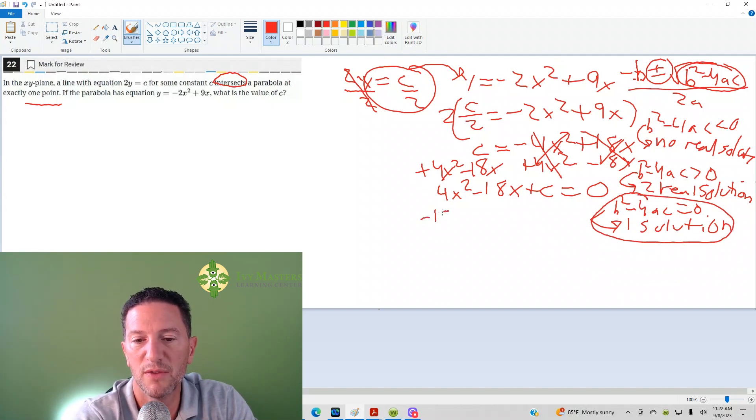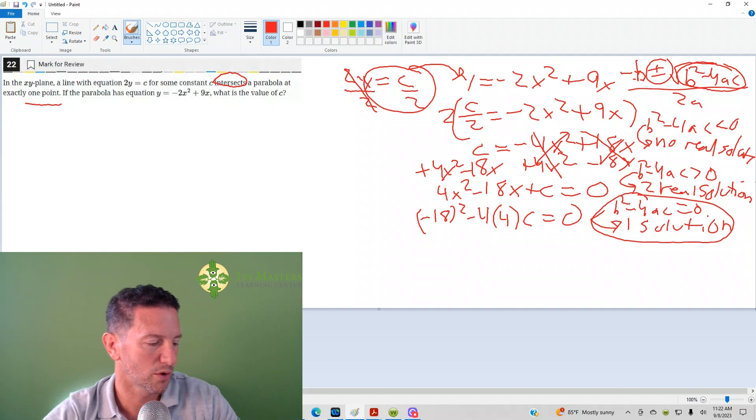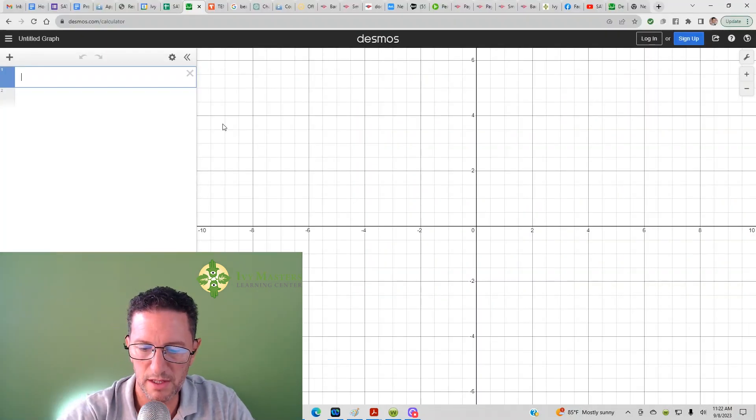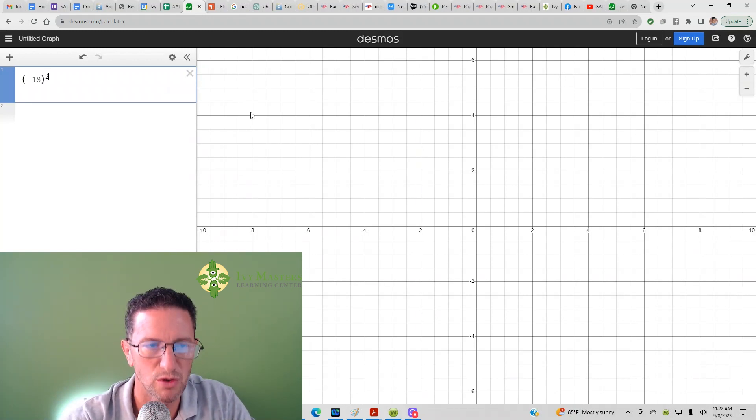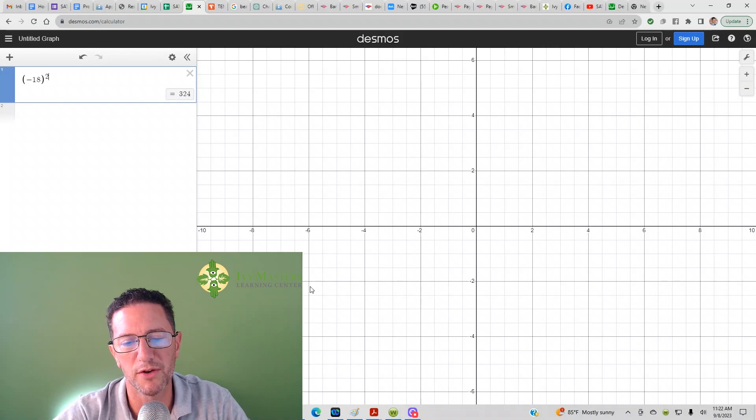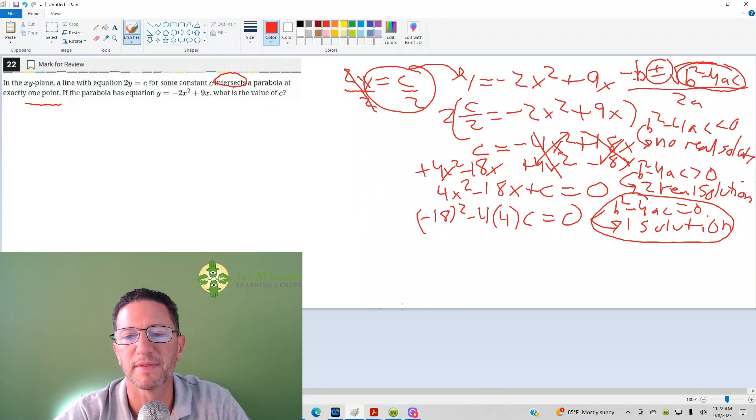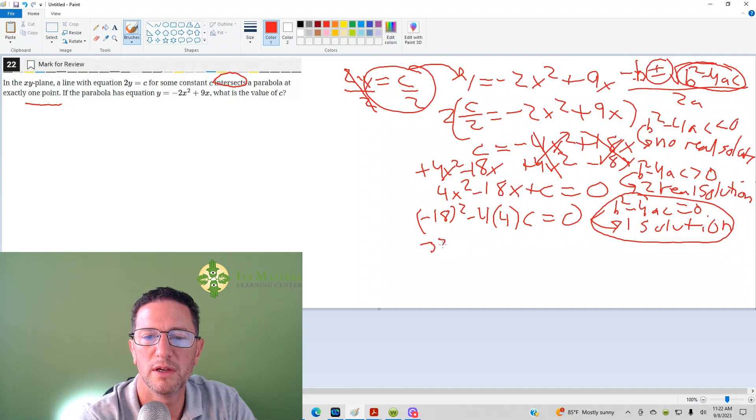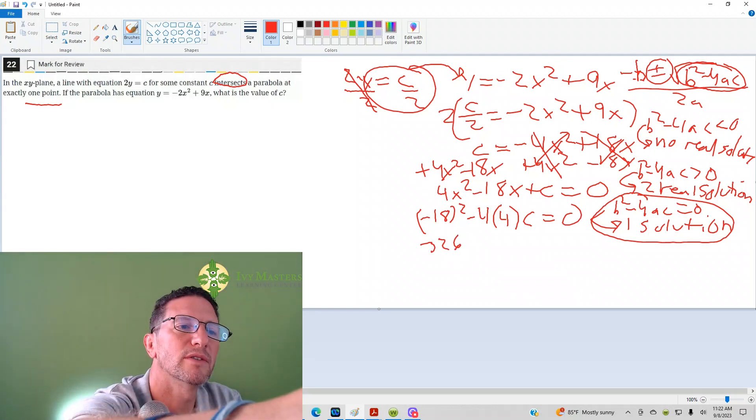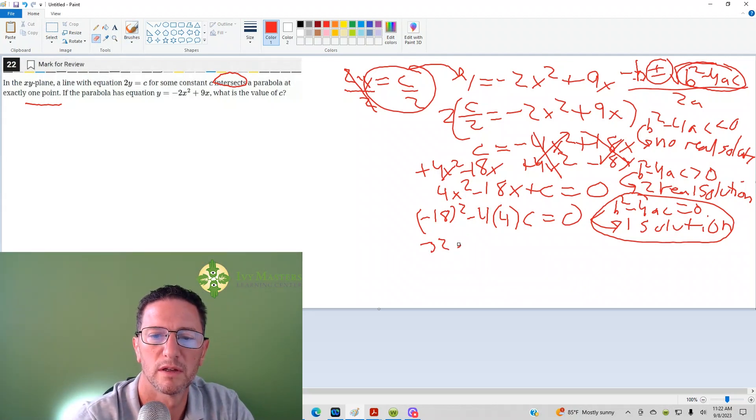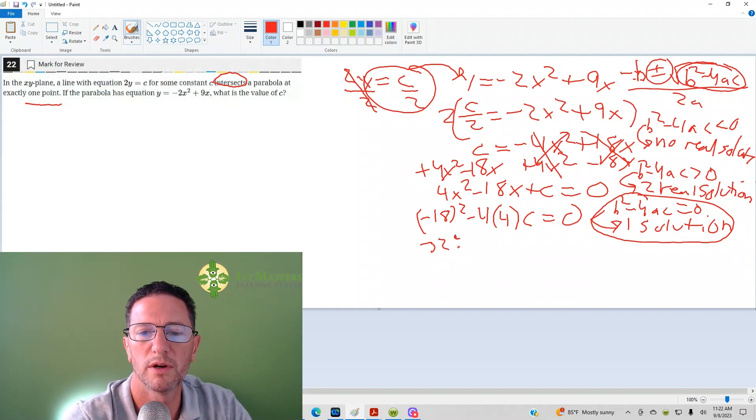So what's your B? It's negative 18 squared minus 4. What's your A? 4. What's your C? It's C. And it's got to equal 0. Make sure you put it in parentheses, and then we square it, and we get 324.